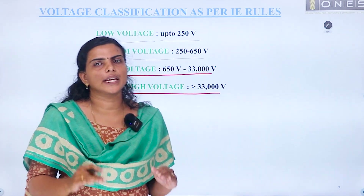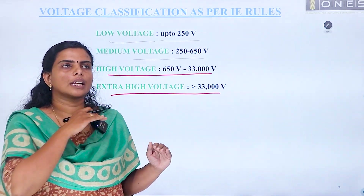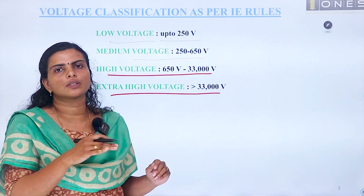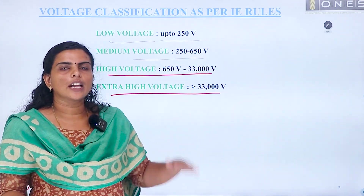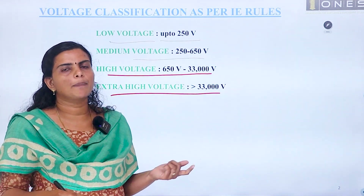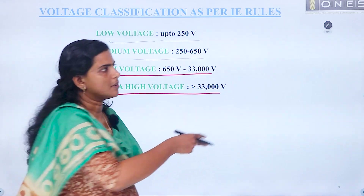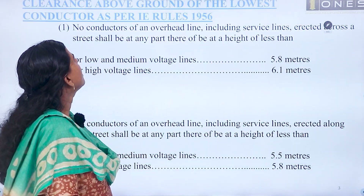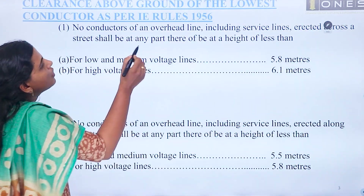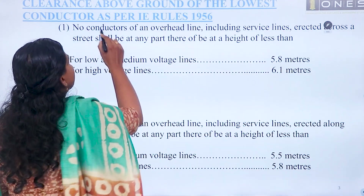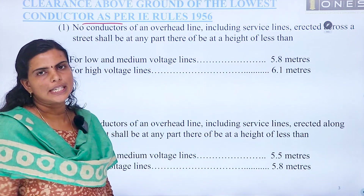Now we will look at some examples — the conductors are along the street and across the street. Where is the ground clearance, depending on the voltage classification? We will cover clearances above ground of the lowest conductor as per IE Rules 1956.